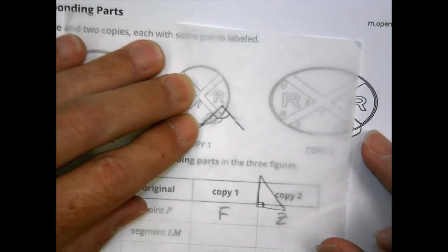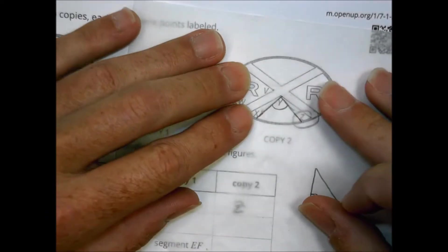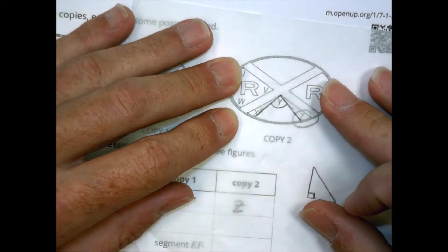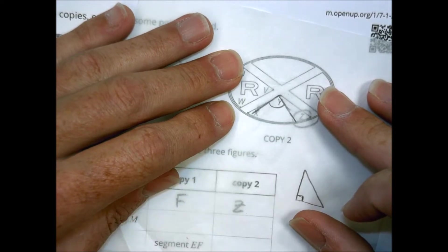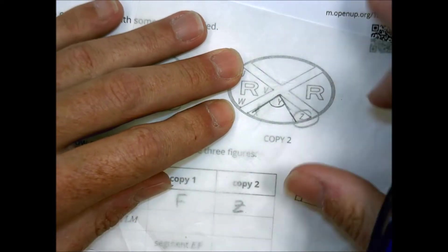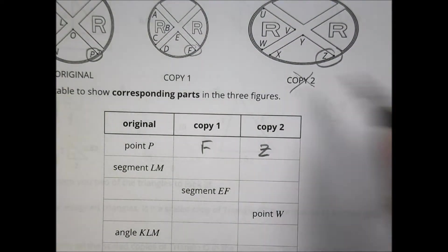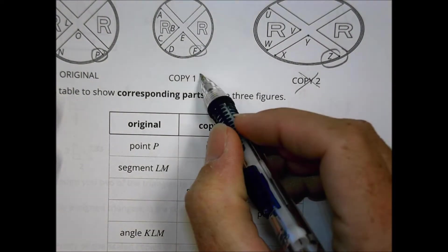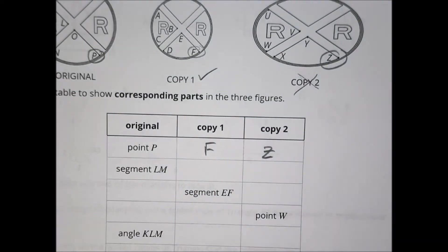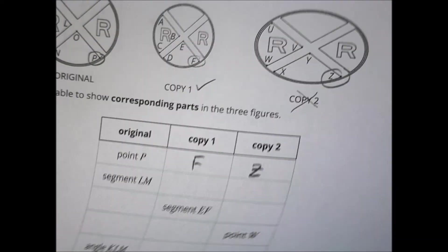But if I take this same angle and I try to lay it on top of copy number two, we realize that it just doesn't quite work out. And so because the angle measurements aren't the same, we decided that copy number two was not a scaled copy, but copy number one definitely was. And so you're working on that tracing to decide what corresponding angles were going to look like. So with angles, we know that they have to be the same.